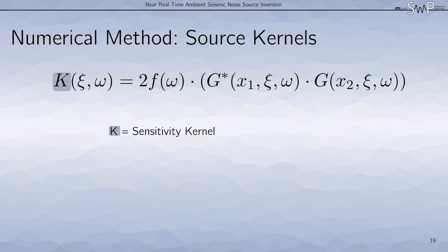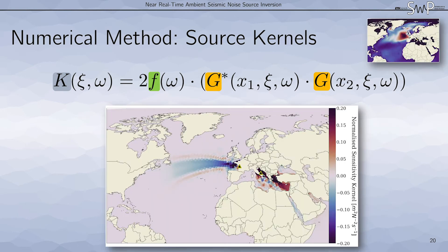Noise source sensitivity kernels can be computed with this equation. To calculate the sensitivity kernel, we again need the Green's functions G for two stations and the measurement dependent joint source. The measurement here is the logarithmic energy ratio that I described before. These sensitivity kernels tell us where an increase or decrease in source strength will decrease the misfit. Here is an example of such a source sensitivity kernel for the same station pair that we used earlier.